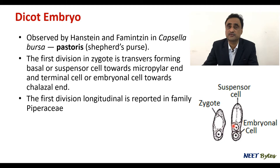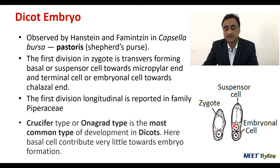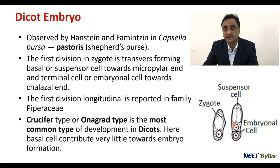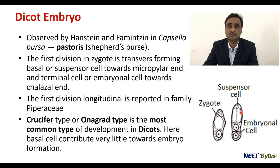The dicot embryo of Capsella is called the crucifer type. It is a type of embryo in which the entire embryo — or the majority of it — is actually formed by the embryonal cell, while the suspensor cell participates very little towards the formation of the embryo. Such a type of embryo development is called the crucifer type.